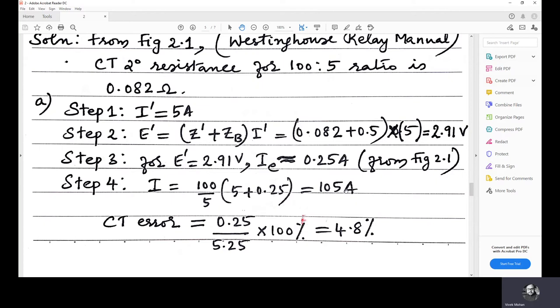Now, you need to find the CT error. CT error is IE divided by IE plus I dash, which is 0.25 divided by 5.25 into 100, which is equal to 4.8%. CT error is 4.8%. Now, we have the excitation current IE, and what is being sensed by the relay which is I. I is equal to I dash minus IE, right?